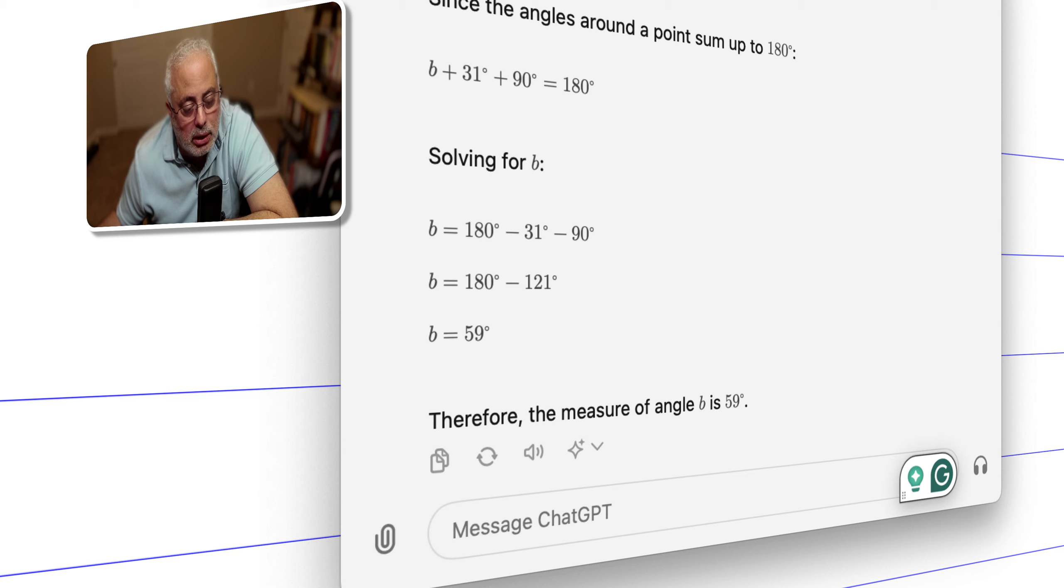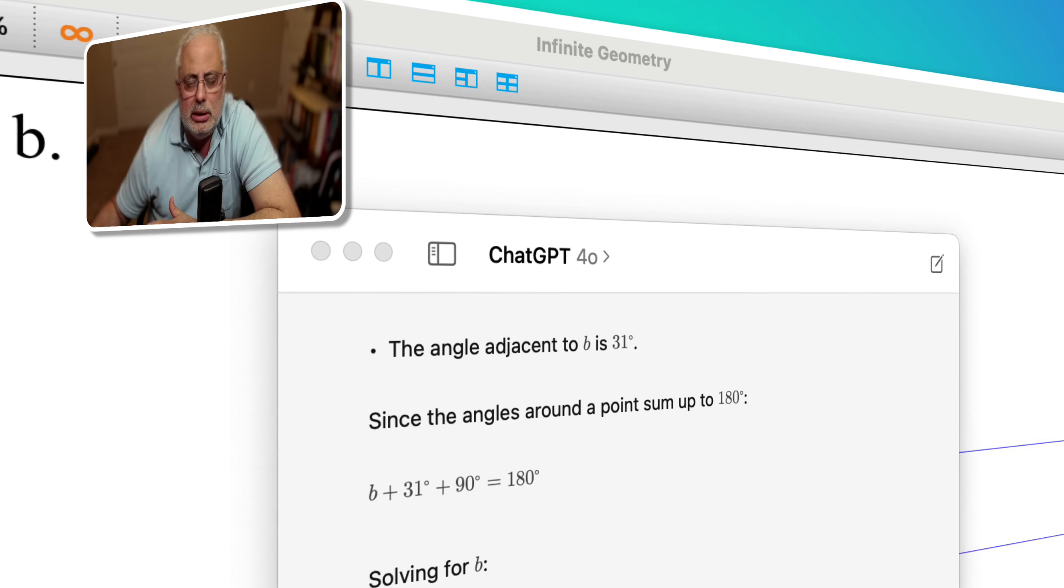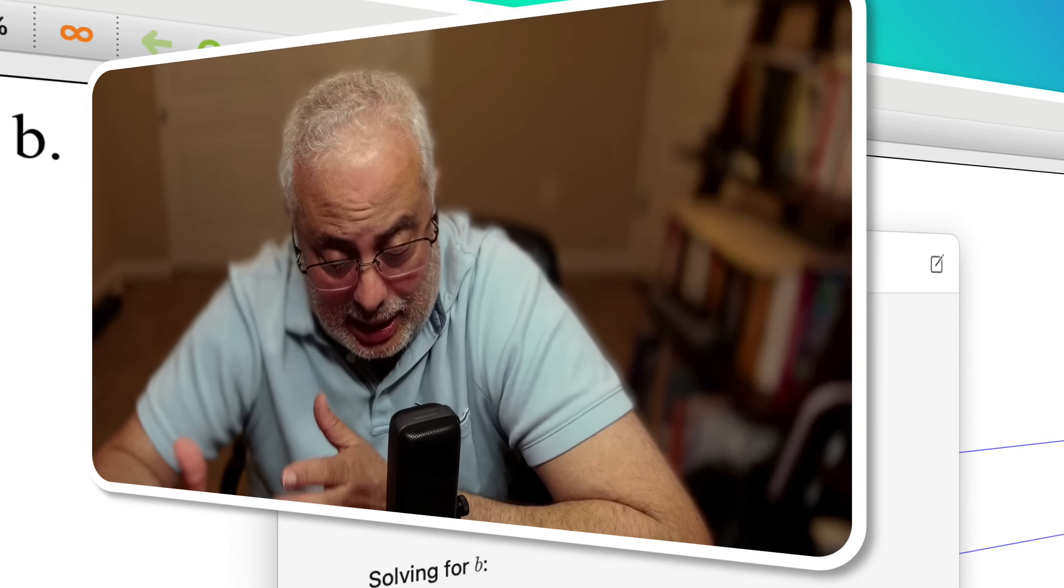They answered the question, because I can use a calculator here, and I also know that 31 plus b is 90, so I can subtract 90 minus 31, and I will be getting the 59°. Two different approaches, the same answer. This is another feature that I have been testing.